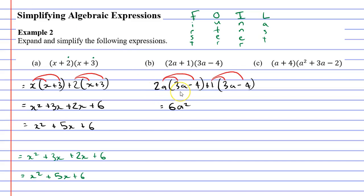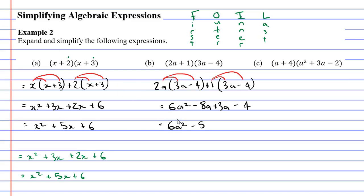Continuing: positive 1 times 3a — 1 times 3 is 3, so plus 3a. Then positive 1 times minus 4 — 1 times 4 is 4, so minus 4 because of the minus. Combining like terms: negative 8a plus 3a is negative 5a. So the simplified result is 6a squared minus 5a minus 4.